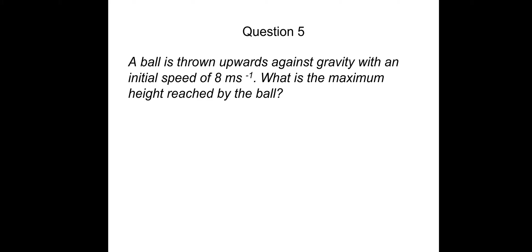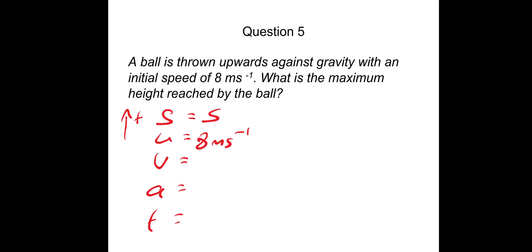Question five: a ball is thrown upwards against gravity with an initial speed of 8 meters per second. What is the maximum height reached by the ball? We take upward as positive. Writing SUVAT: S is the maximum height we're looking for. The initial speed U is 8 meters per second thrown upwards. The final speed V — at maximum height the ball has stopped momentarily before changing direction, so V is zero. Acceleration due to gravity acts downward, opposite to our positive direction, so A is minus 9.81 meters per second squared. Time we could find but we're not interested.